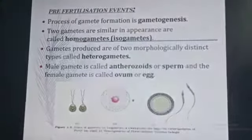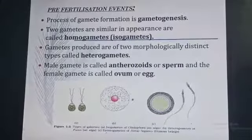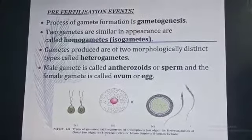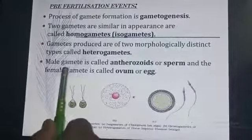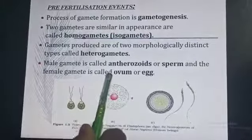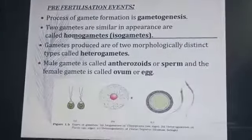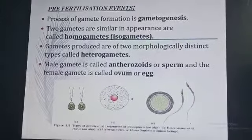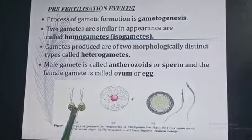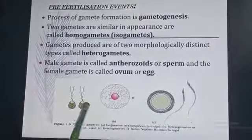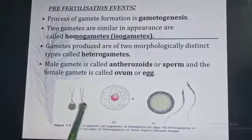These sperm are haploid in nature, having a haploid set of chromosomes. Female gametes are called ovum or egg. Isogametes are found in Cladophora.